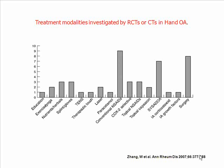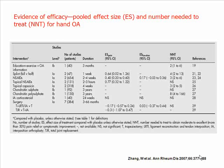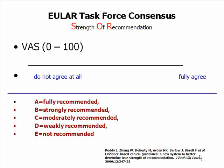It was a difficult task to elaborate recommendations for hand osteoarthritis, as the evidence is very small, indicated by the low number of publications of randomized controlled trials or controlled trials. We therefore decided to use another system to determine the strength of recommendation by expert opinion, as indicated by a VES scale and a five-point rating scale.